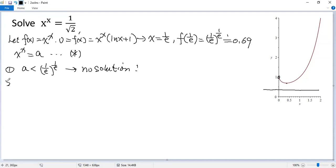The second case. If a equals the minimum value. So a equals 1 over e to the power of 1 over e. Then y equals a is just tangent to the minimum point. So it has a unique solution. x equals 1 over e.